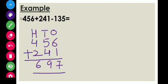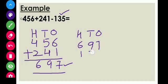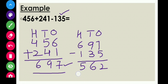Now follow the second step: subtract the third number from this sum. Again, write ones, tens, and hundreds. Put the sum of the two numbers at the top — six hundred and ninety-seven — and the number which you have to subtract under that, 135. Put a sign of minus. Now start subtracting from the ones column. Seven minus five is equals to two. Nine minus three is equals to six. Six minus one is equals to five. So children, 562 is the final answer of our question: 456 plus 241 minus 135 is equals to 562.